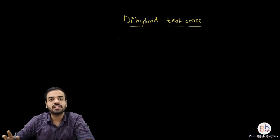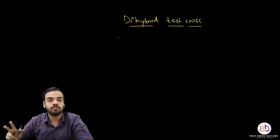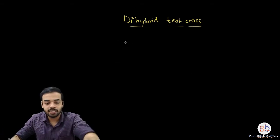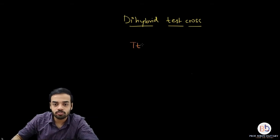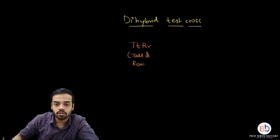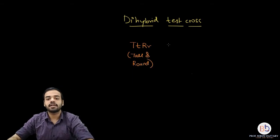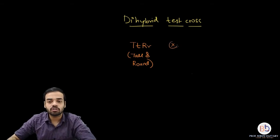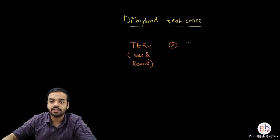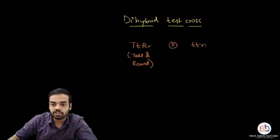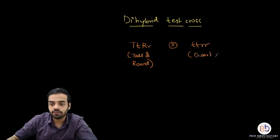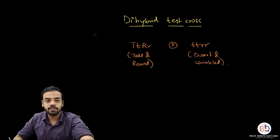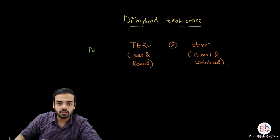We are going to select the characters: height of the plant and shape of the seed. The dihybrid is going to be capital T small t capital R small r, which is a tall and round hybrid. And please remember, a test cross is a cross in which the F1 hybrid is crossed with a recessive parent. So the recessive parent is going to be small t small t small r small r, which is a dwarf and wrinkled parent. So let me write down the parents.